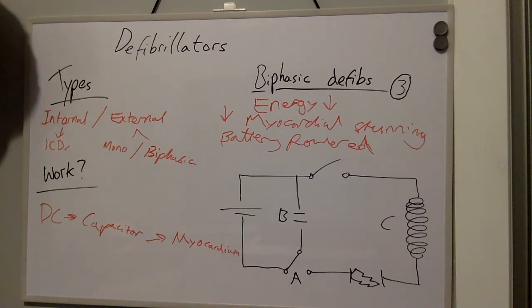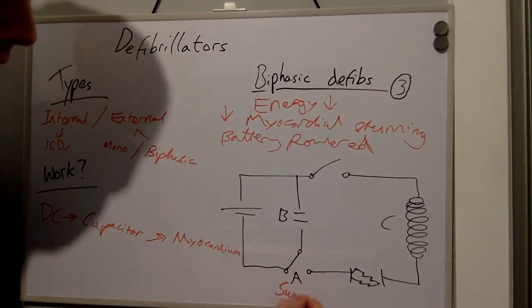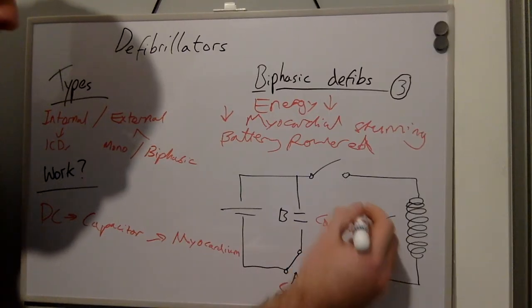Now to look at this diagram of a defibrillator. Firstly to label it: A is a switch, B is a capacitor, and C is an inductor.